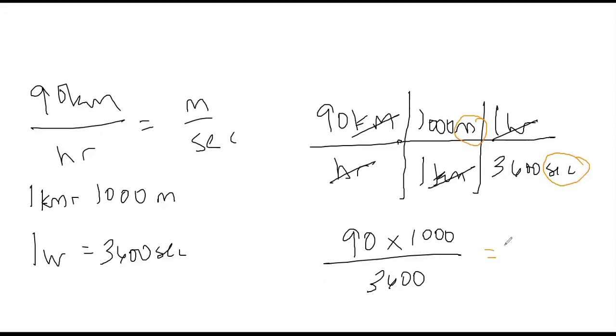This gives us 90 times a thousand over 3600 and we're left with meters per second. 25 meters per second.